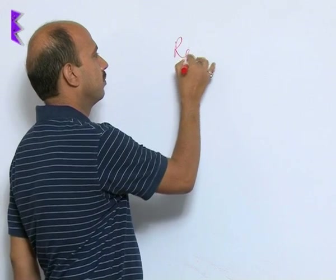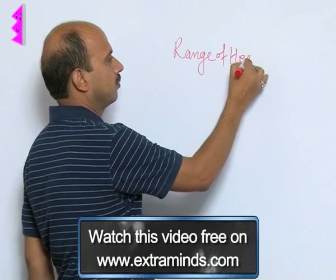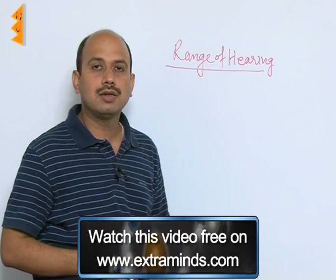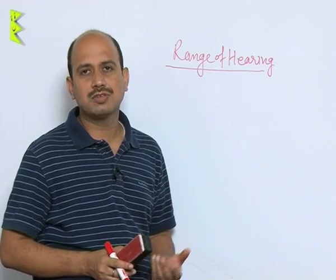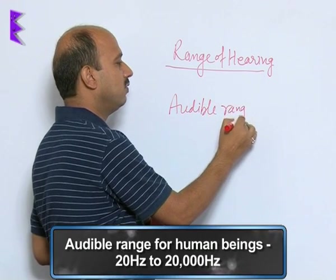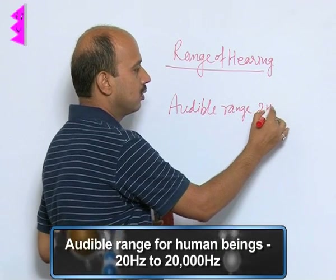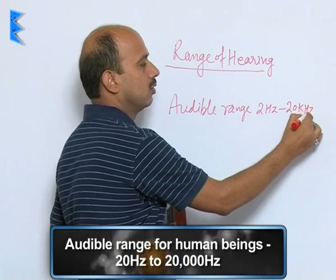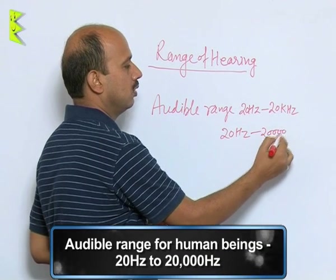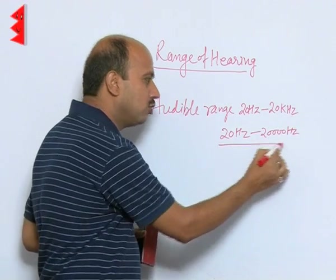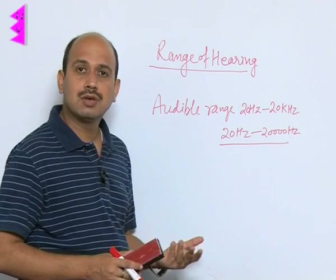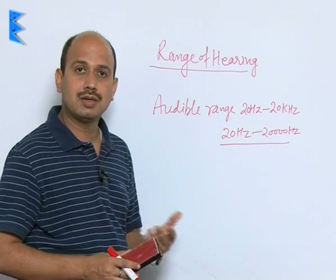Now we will look at the range of hearing — hearing range means up to what frequencies we can hear clearly and beyond what frequencies we cannot hear. The audible range for human beings is 20 hertz to 20 kilohertz. Within this range of frequencies a human being can hear, but the range of hearing can also change over time if there is some defect in the eardrum or other problems.